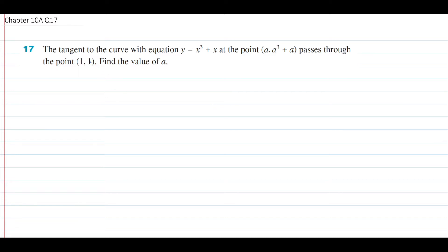So question 17 - let's have a read. The tangent to the curve with equation y equals x cubed plus x, at the point (a, a cubed plus a), passes through the point (1, 1). Find the value of a. It's a very short question, but being the last question of this subtopic it must be a slightly difficult question. And it certainly is - a lot of students face a block when doing this question, and I'll show you where the block happens.